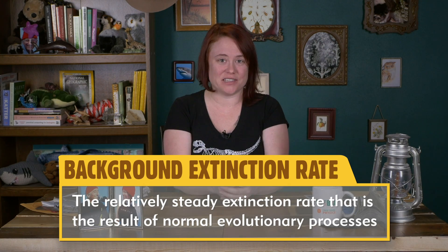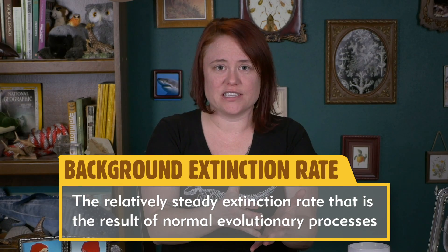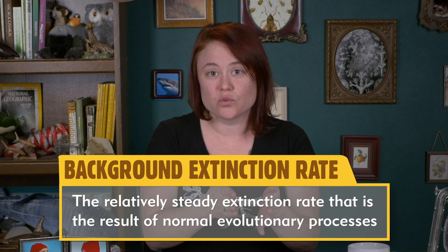Extinction isn't just something that happens because of human pressures. There's also an extinction rate that's normal in the fossil record, known as the background extinction rate. Throughout the fossil record, we define extinction events as relatively short periods with greatly increased extinction rates. A mass extinction event must eliminate more than 60% of species in a relatively short period of geological time, with widespread impacts.